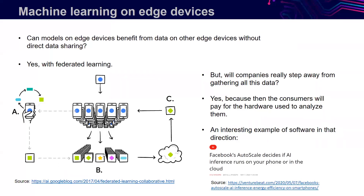All these different models are taken together and produce one new version of a universal model, which goes back on the devices, and then the circle repeats. In this way, we can have machine learning that takes into account data from different users without them having to share the data. Will companies go for this? As time goes by, probably they will, because edge computing has a nice economic effect — it makes the users finance the hardware that companies will then use to analyze their behavior. Facebook has developed a system called OutScale that basically decides when some calculation will run on the device and when it must go to the cloud based on the device's capabilities.